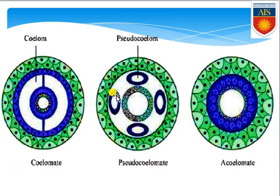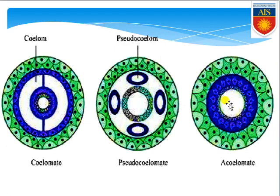Now looking at diagrams: in an acoelomate organism, the outer green layer is the ectodermal layer, the blue layer is mesodermal, and inside is the endodermal layer, with the white portion being the gut or alimentary canal. Between ectoderm and endoderm there is no other cavity present — this is the structure of acoelomate organisms.